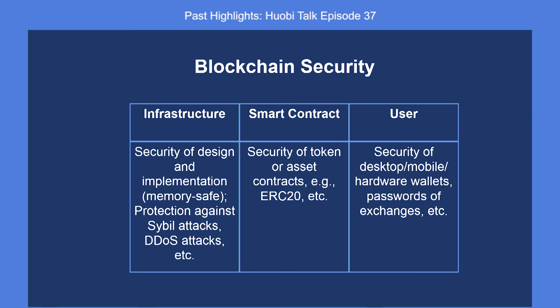The infrastructure layer — basically we should ensure the security of the design and implementation of the public blockchain system. For example, we should at least try our best to ensure memory safety for public blockchain systems, especially those written in C or C++, like Bitcoin and Ethereum.